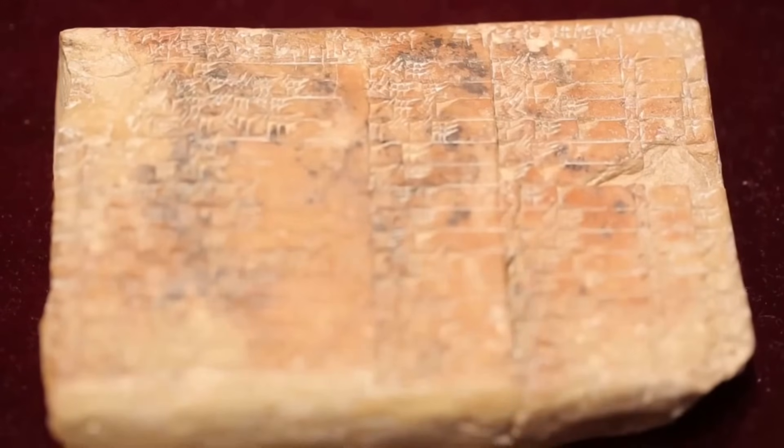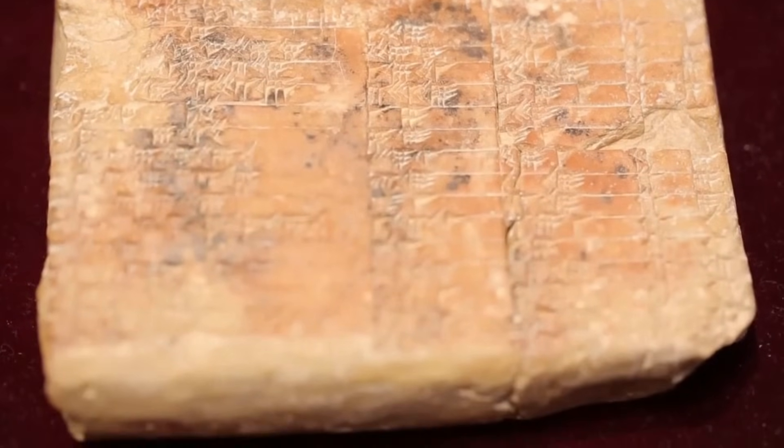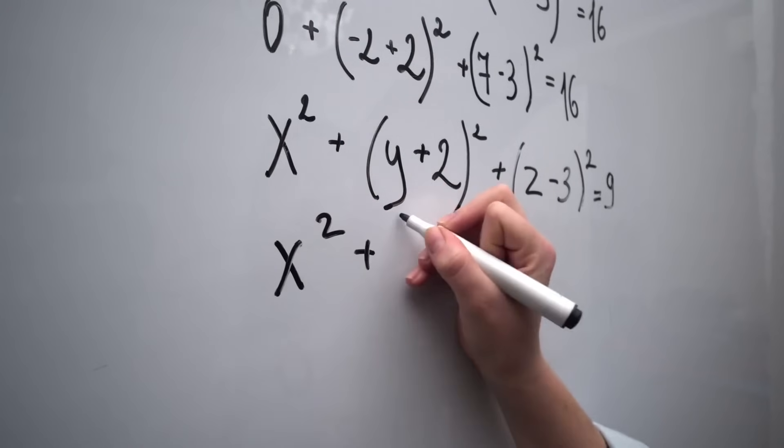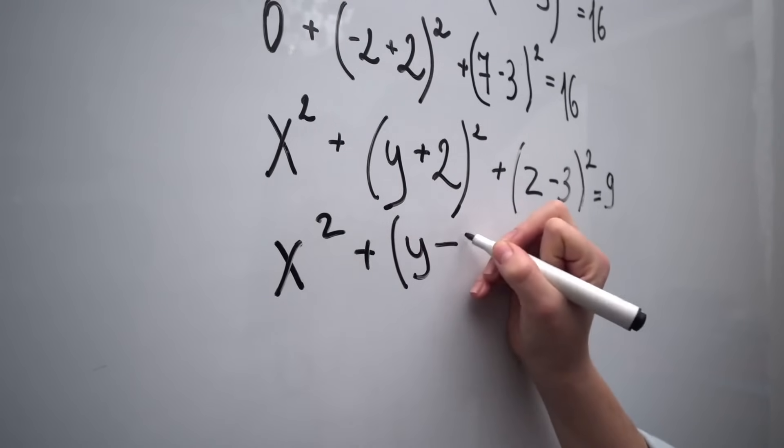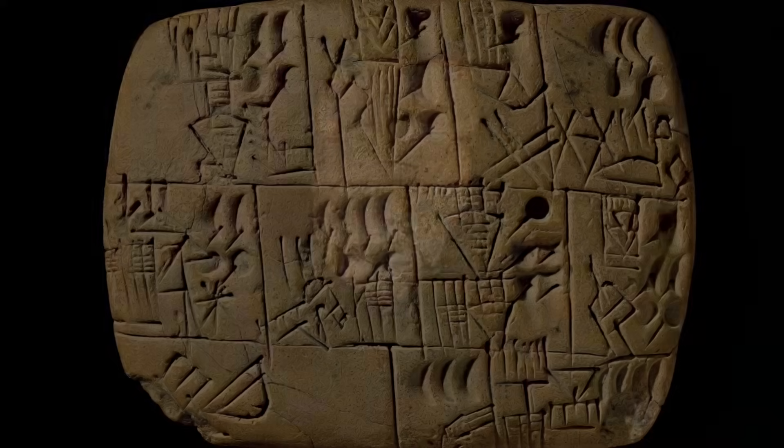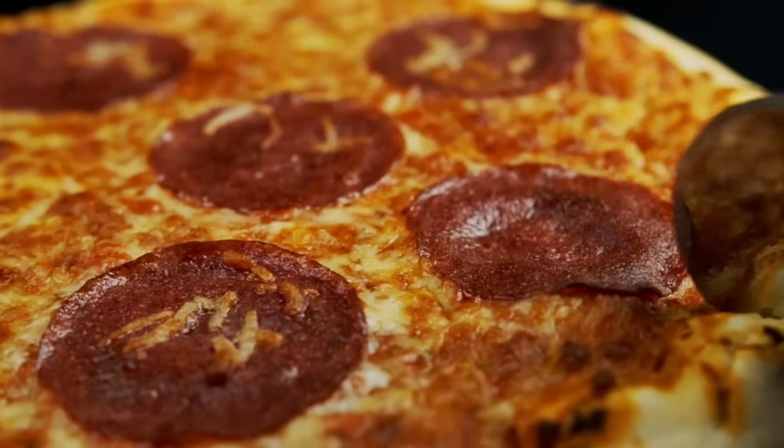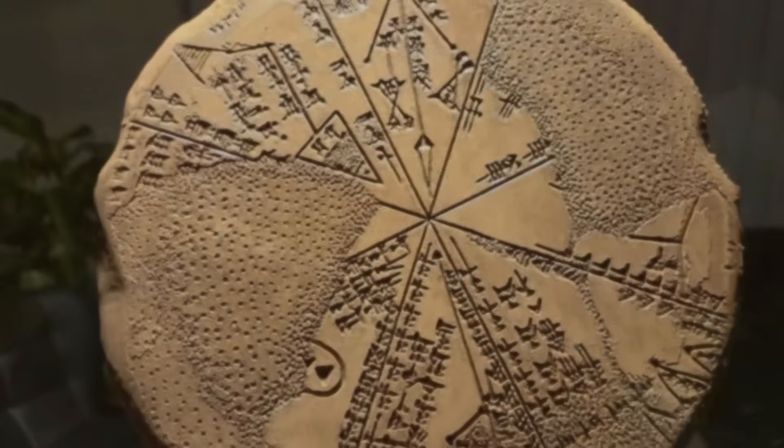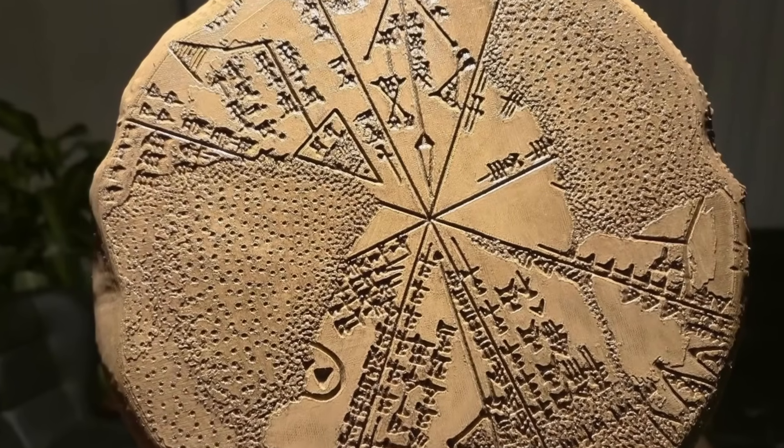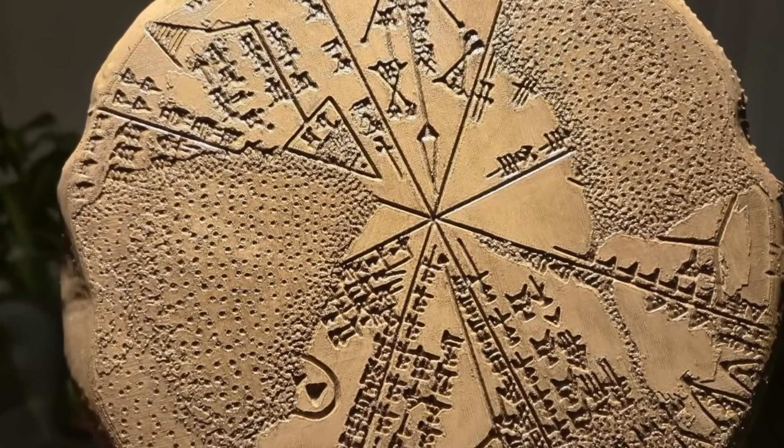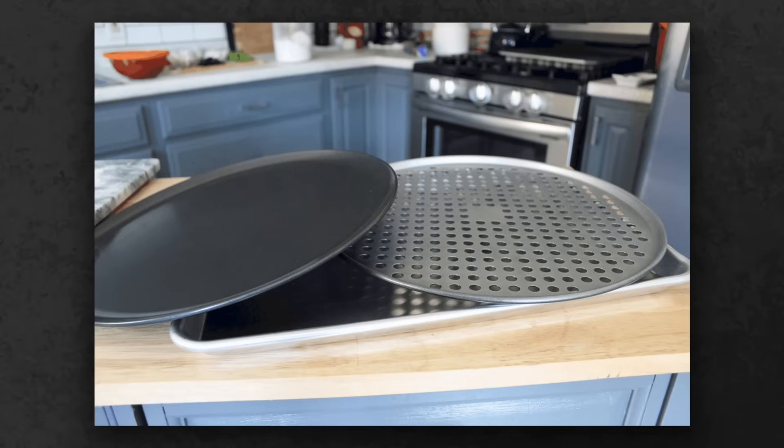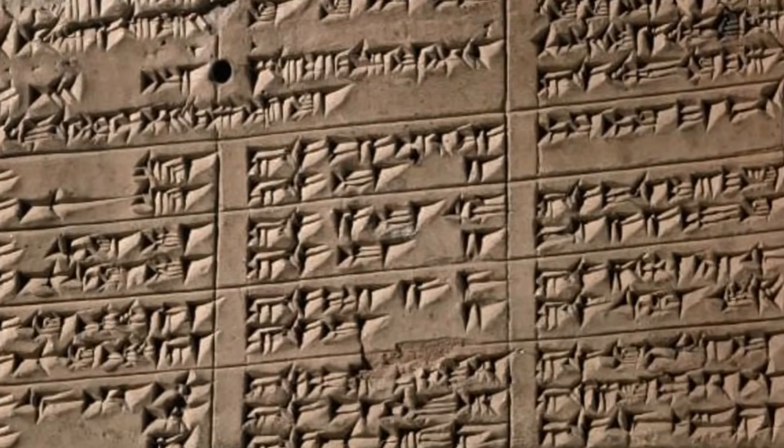In their world, the year was thought of as 12 months of 30 days each. 12 times 30 gives you 360. But that's just the starting point. The real magic is in how easily 360 slices up. Cut a pizza into 360 slices, and you can hand out halves, thirds, quarters, fifths, sixths, or twelfths. No one gets cheated, and there's never a sliver left over.